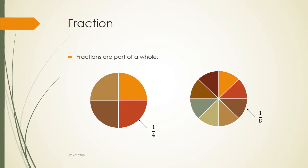We're going to look at fractions. A fraction is actually a part of a whole. You can imagine a pie that you have every day. If you cut this pie into four sections like this, every single section is actually a quarter. Another way of writing a quarter is one over four — one piece out of a total of four pieces. If the same pie is cut into eight pieces, each single piece is one out of a total of eight, which is one over eight.